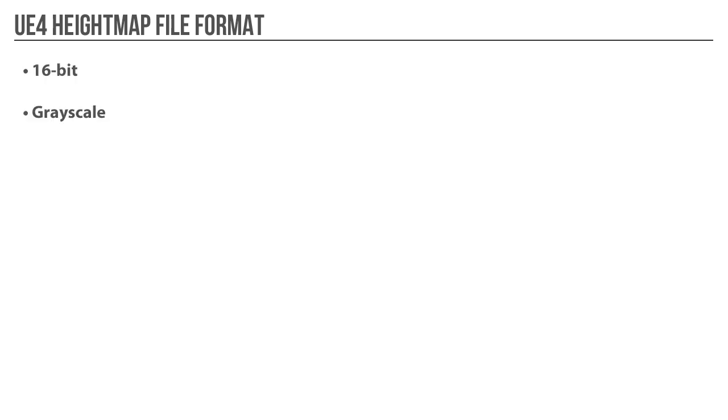Height map file format is very important. When you export height maps for UE4, follow this format: it has to be 16-bit, not 8-bit, and it has to be grayscale. You can save this texture as a PNG or as a RAW file.